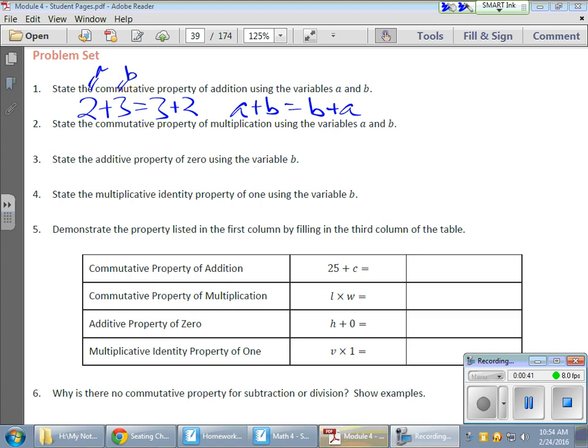The same thing holds true for multiplication. If 2 times 3 is equivalent to 3 times 2, then I could substitute variables in place of those values and the same thing would be true. So if 2 equaled a and 3 equaled b, it would be a times b equals b times a.